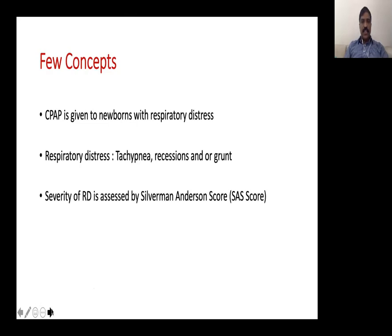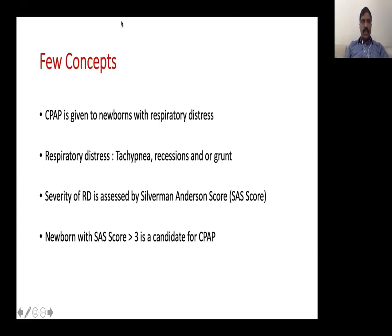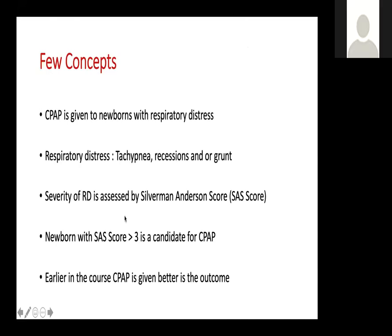Severity of distress is assessed by the Silverman-Anderson score. For all babies with a Silverman-Anderson score more than three, the newborn is an eligible candidate for CPAP. For preterms especially, if the score is more than three, CPAP should be started earlier — the earlier CPAP is started, the better the outcome. Starting in the delivery room gives definitely much better outcomes.